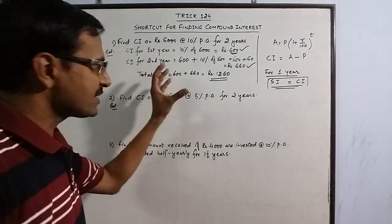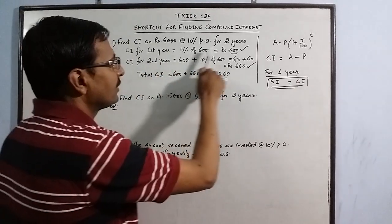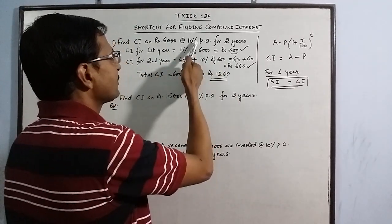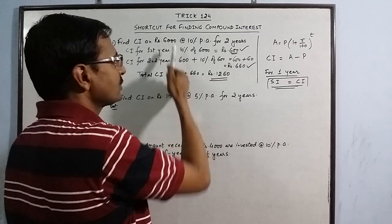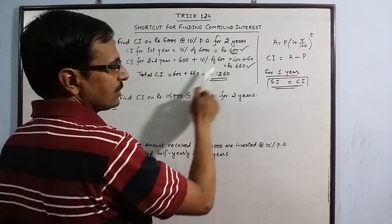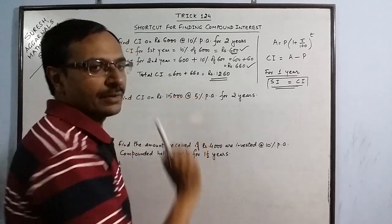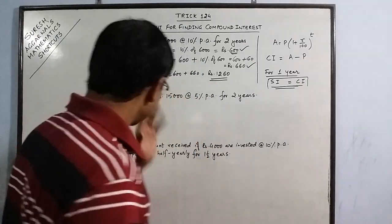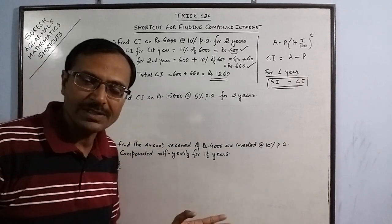Little practice of this and you can get rid of all these steps. You can just find 10% of 6000 here and then 10% of 660 here, then you will get the total interest. Let us practice this concept taking one more example.